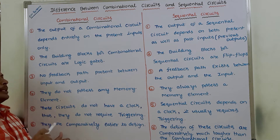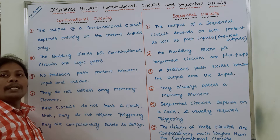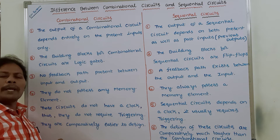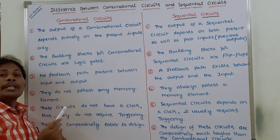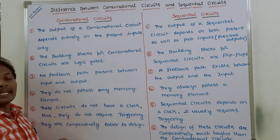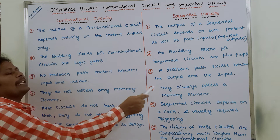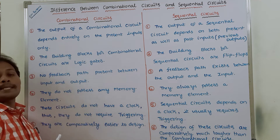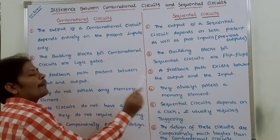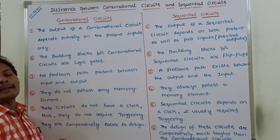Fourth point: combinational circuits do not possess any memory element. Because the output depends only on the present inputs, the combinational circuit does not store any state, so there is no requirement for any memory element. Whereas sequential circuits always possess a memory element, which is used for storing the previous outputs of the sequential circuit.